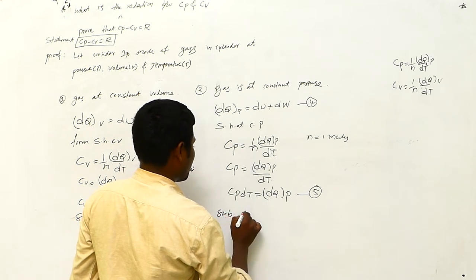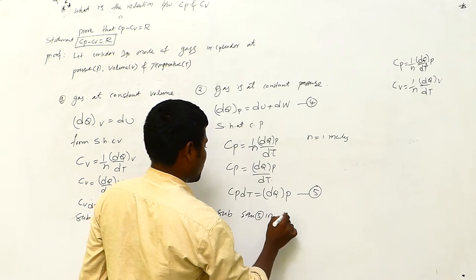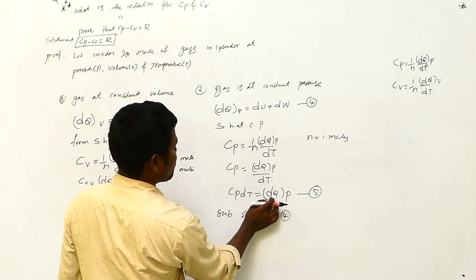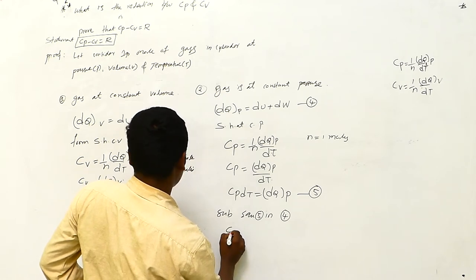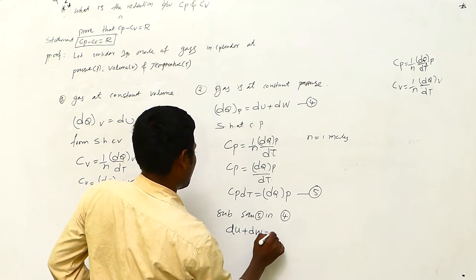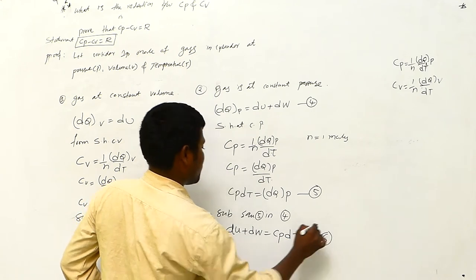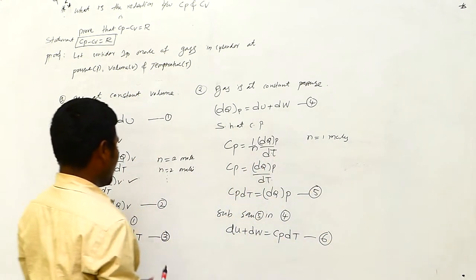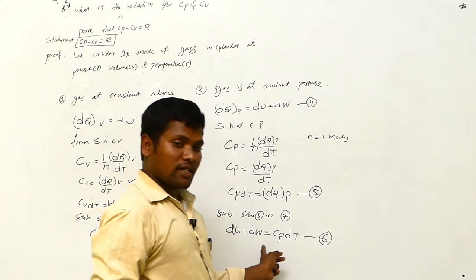Now substitute equation four and equation five together. We have two equations — one at constant volume and one at constant pressure. From equation three, we have the dU value: dU equals Cv·dT.